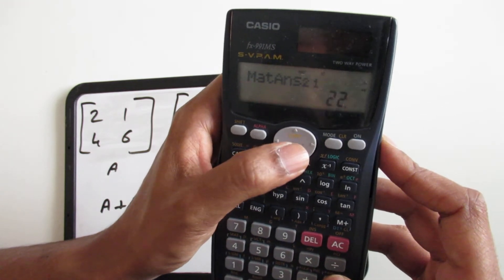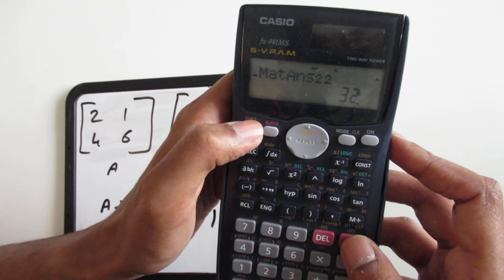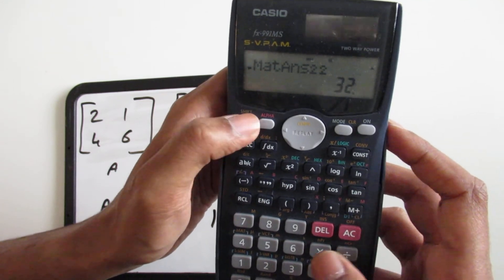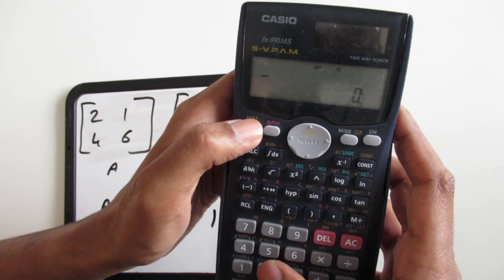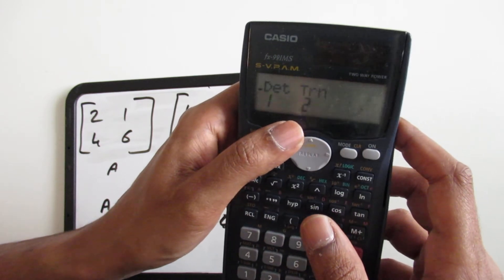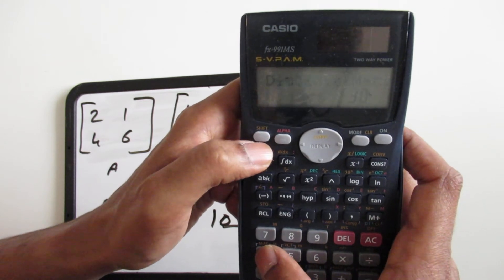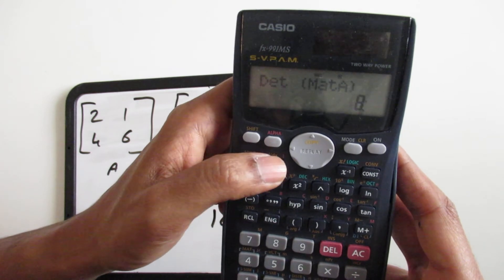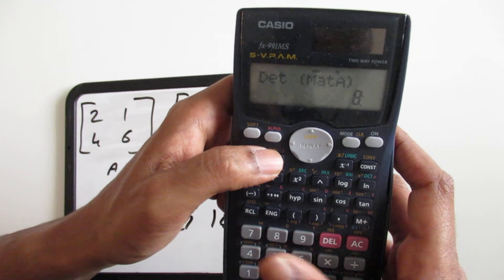You can do matrix addition, multiplication, and subtraction as well. There's also another thing that you can do, which is you can find the determinant and transpose. If I click determinant and I want to find the determinant of matrix A, that's 8. Similarly you can find the determinant of matrix B as well.